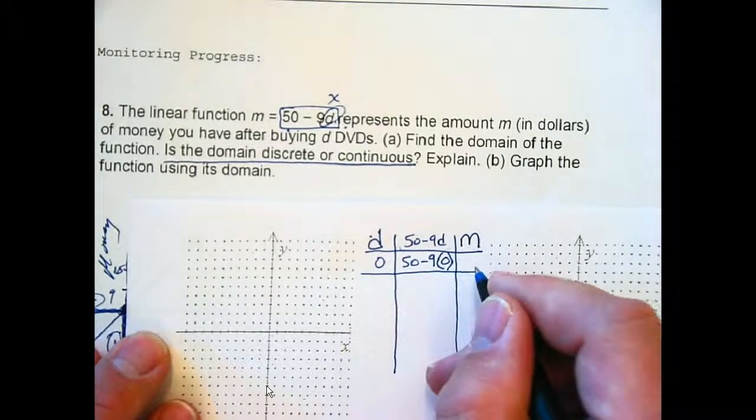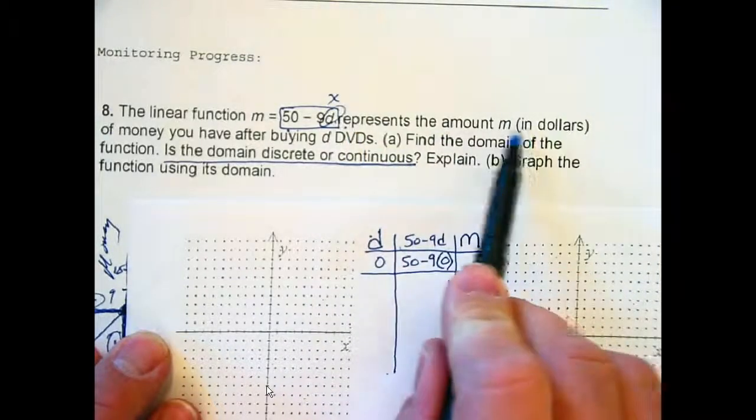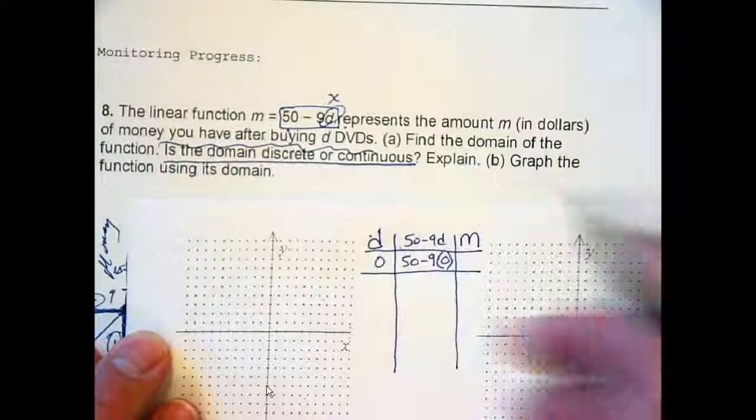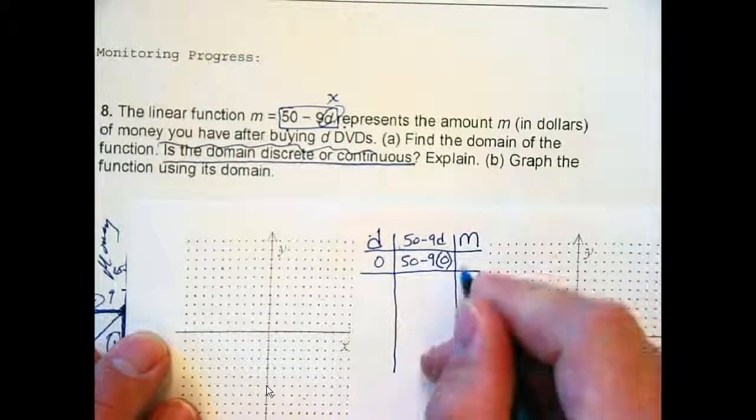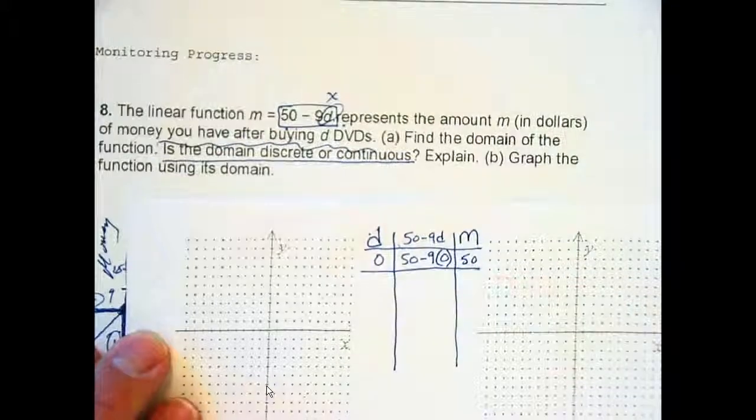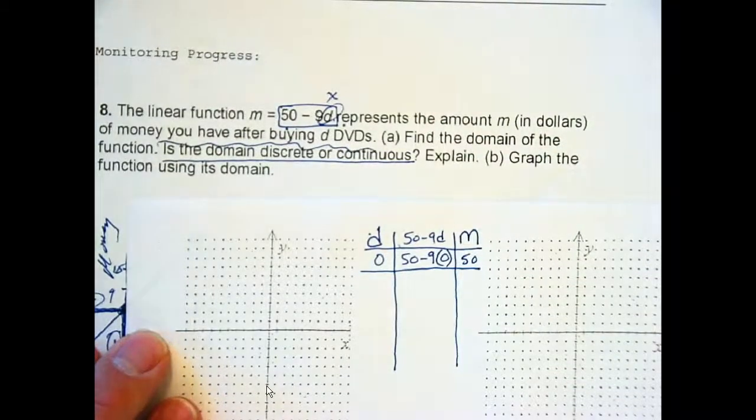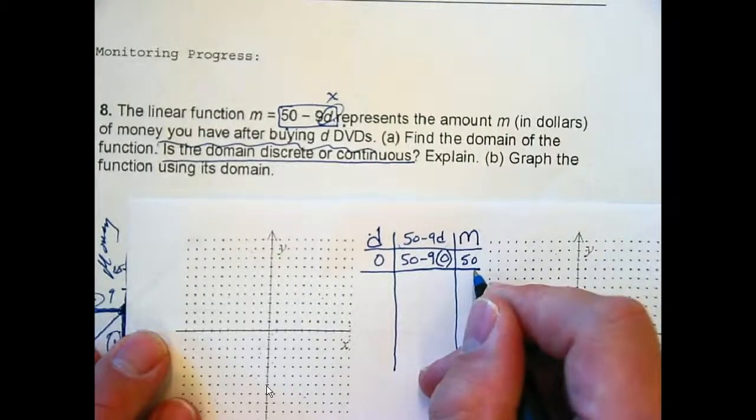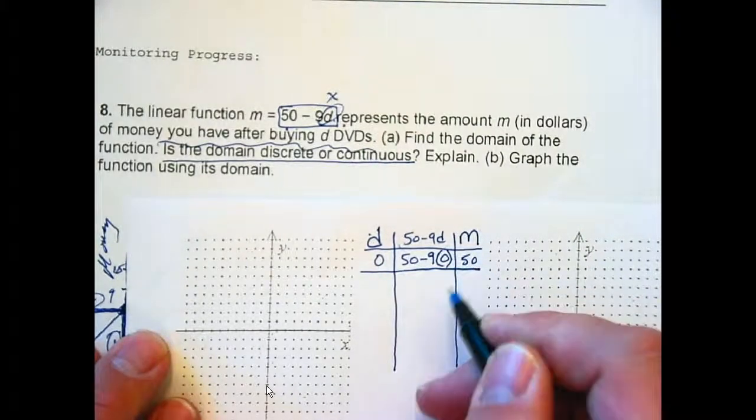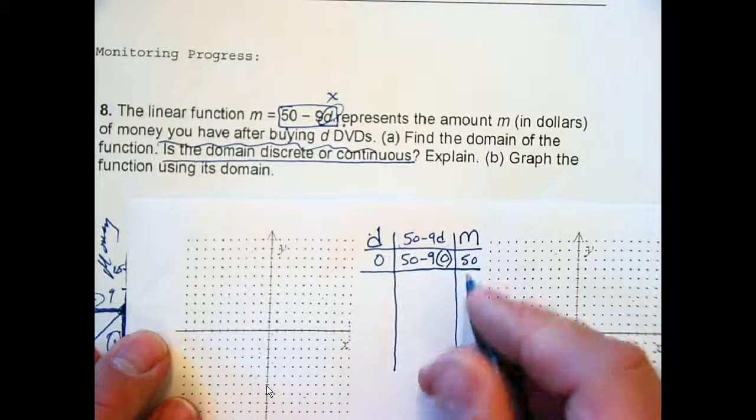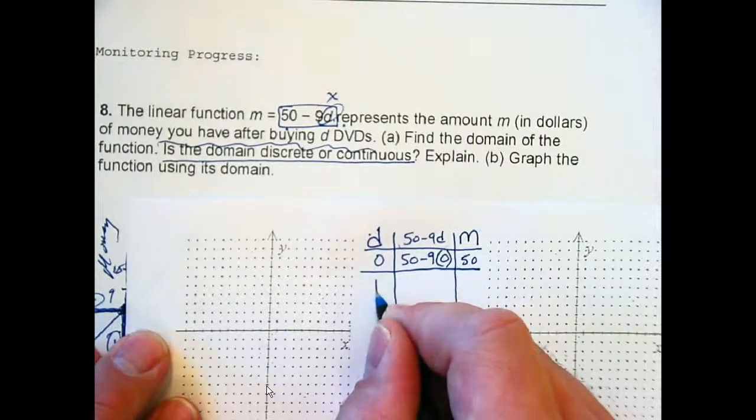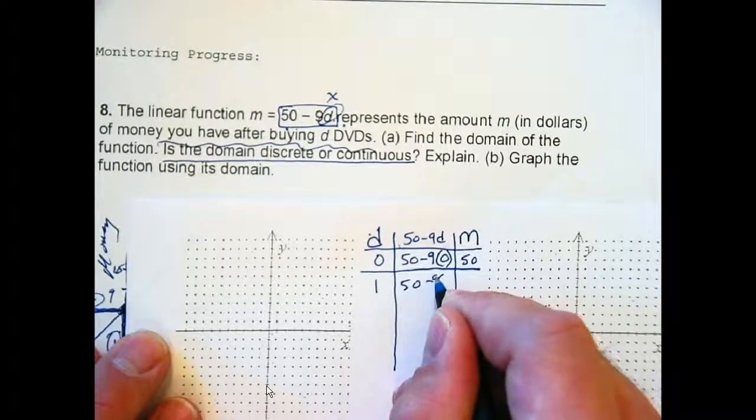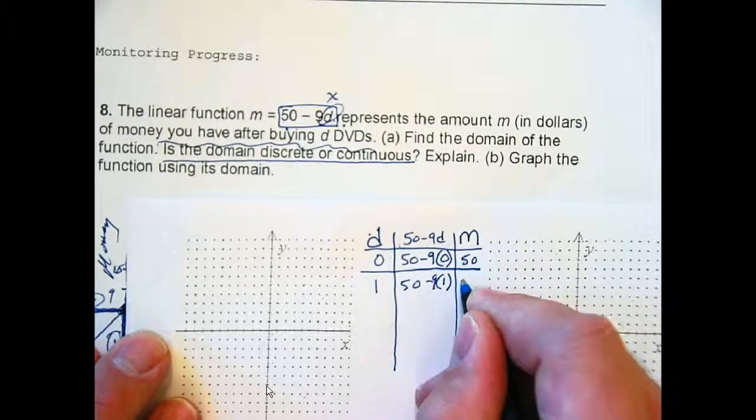Could you buy, you can't buy negative. You could buy none. If you buy zero, how much money? It says, this represents the amount of money you have after buying it. So, if I don't buy any, how much do I have? 50 bucks. Right? So, how much did you start with? 50 dollars. You walk in the store with 50 bucks. If you don't buy anything, you still have 50.